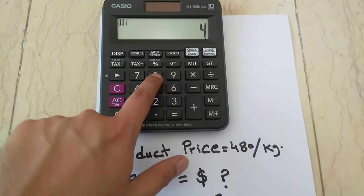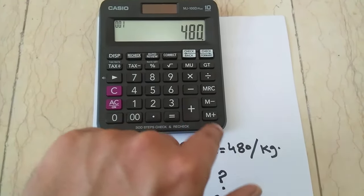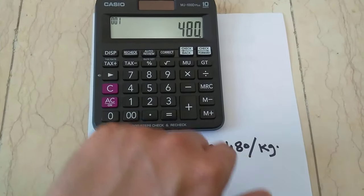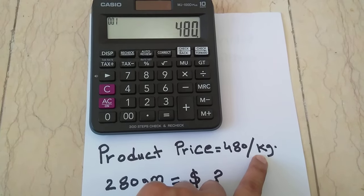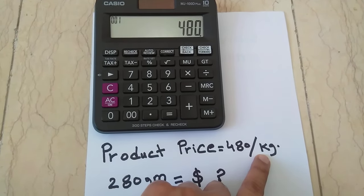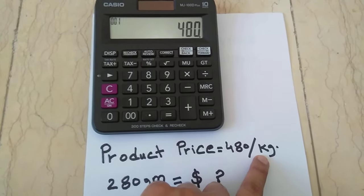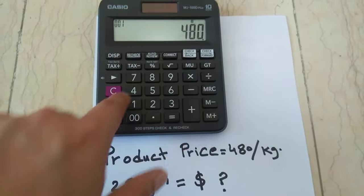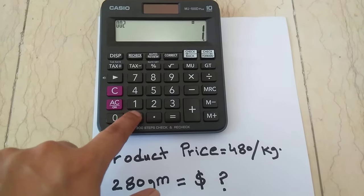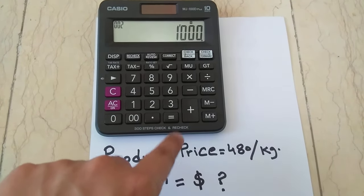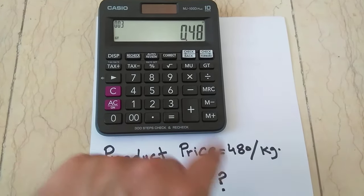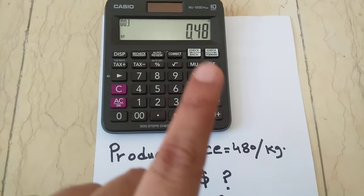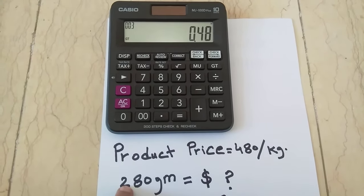What you have to do first on the calculator is type 480, which is the total value per kg. As you know, 1 kg equals 1000 grams, so you divide 480 by 1000, and the answer equals 0.48.